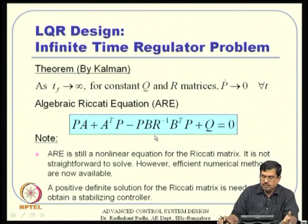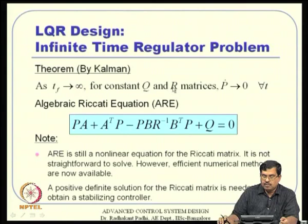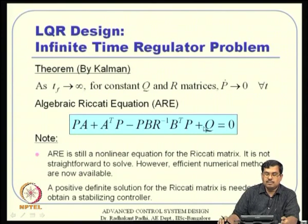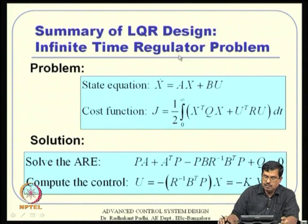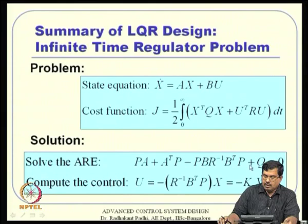A positive definite solution is obtainable when AB is controllable, Q is positive semi-definite, and R is positive definite. The summary of the infinite-time regulator: given x-dot = Ax + Bu with constant matrices, solve the algebraic Riccati equation for P, then U = -R⁻¹ B-transpose P × X, where K = R⁻¹ B-transpose P is the gain matrix. The beauty of LQR over pole placement is that it is equally valid for multiple inputs without further manipulation.